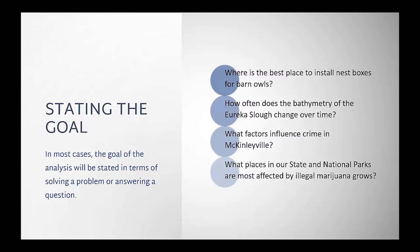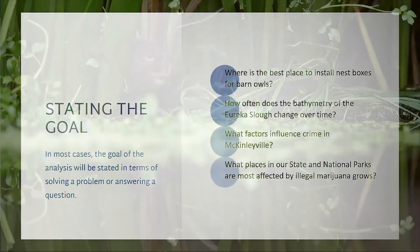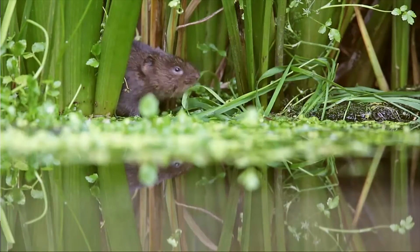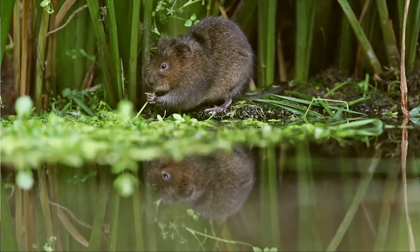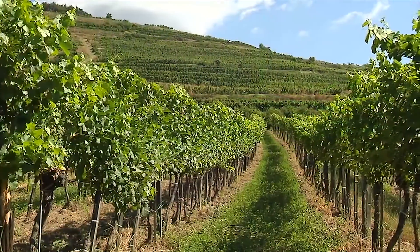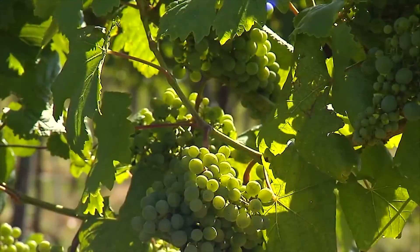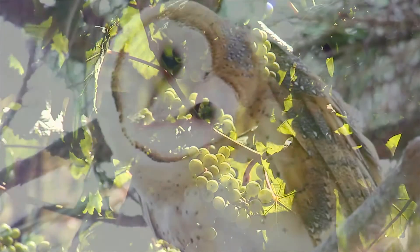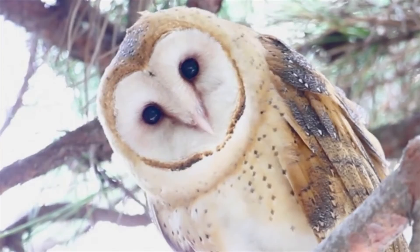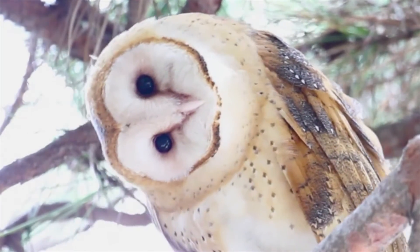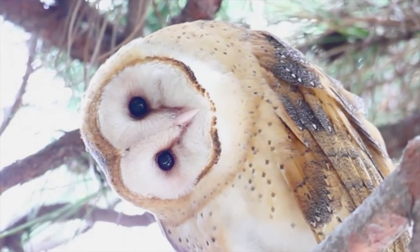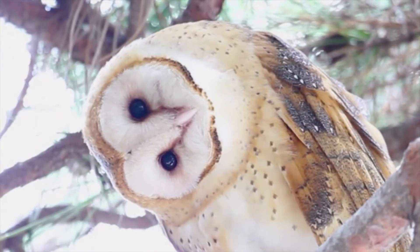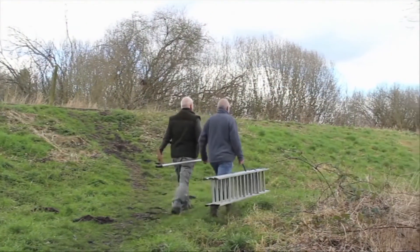While these questions are a good place to start, it would be more useful to state the goals and objectives in a way that includes specific details. Let's take our barn owl nest box problem. Rodents such as gophers and voles can cause significant damage to vineyards as they chew on roots and bark. In Napa Valley, California, some farmers are turning to barn owls as an environmentally friendly means to control the rodent population. In order to attract barn owls, farmers will install empty nest boxes around the vineyards, but the question is where to install them.